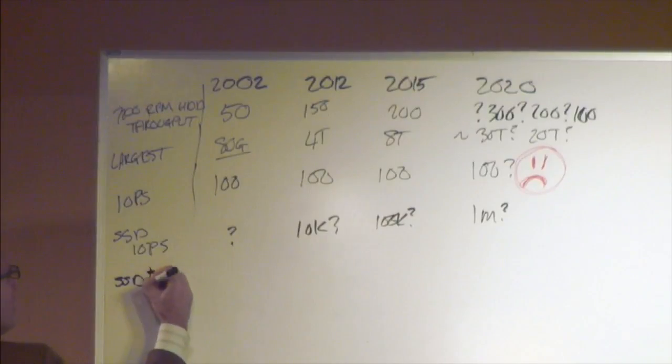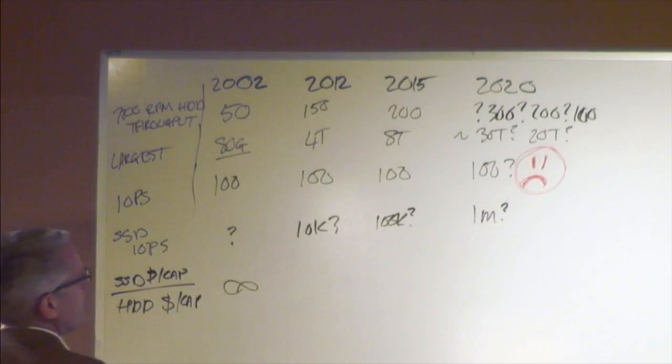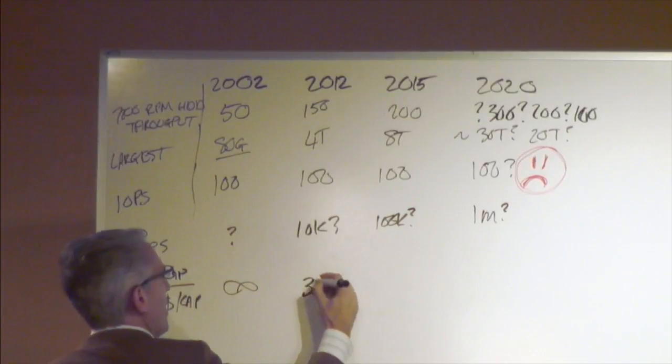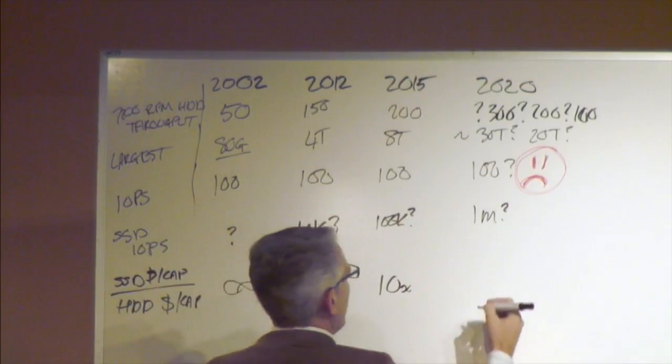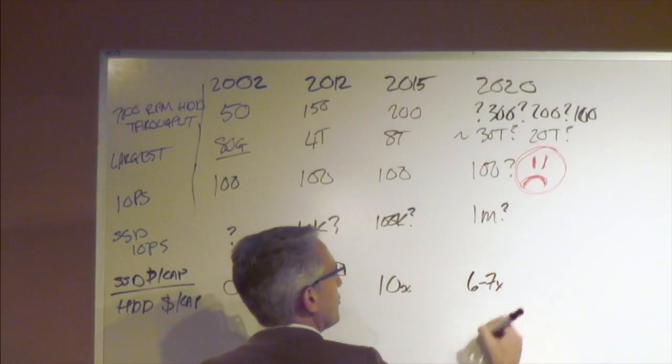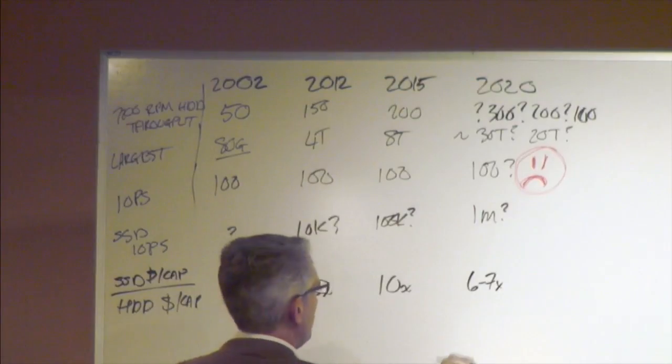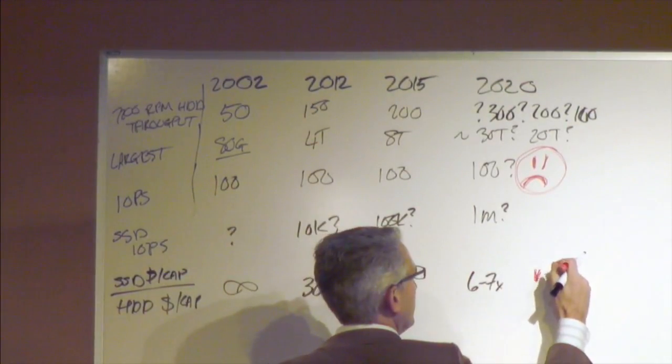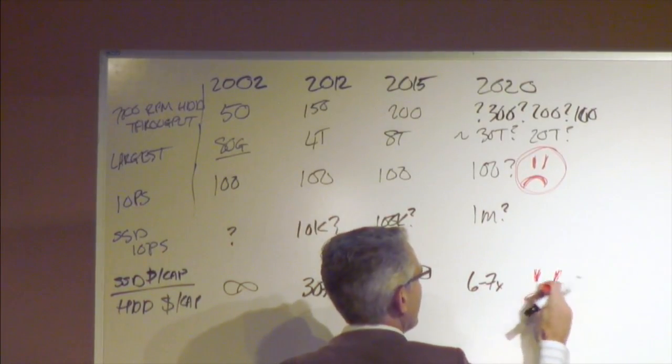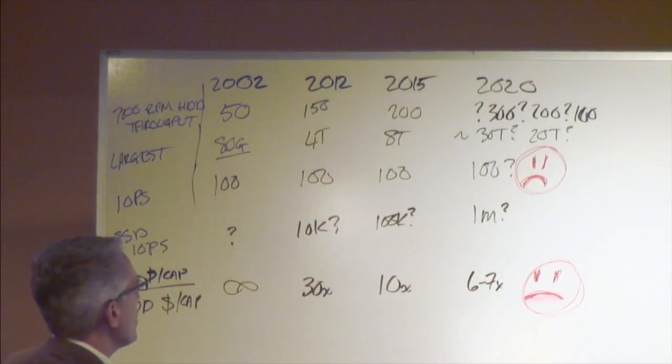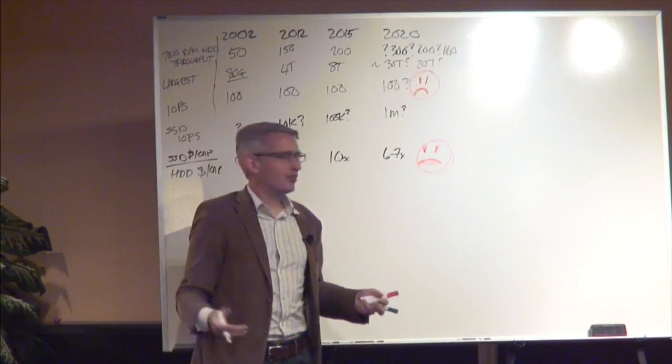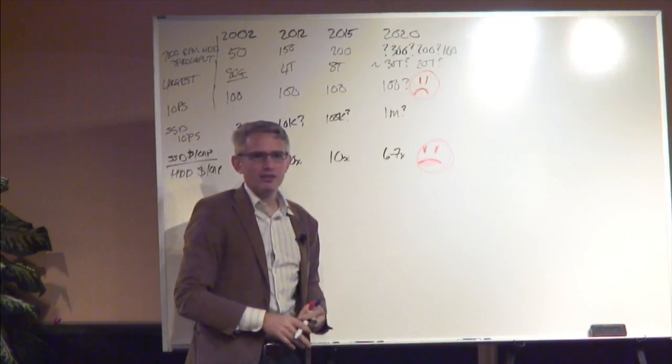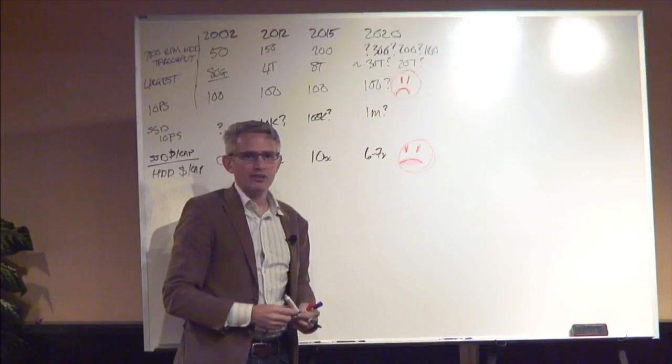But then the dollar per capacity divided by the hard disk drive dollar per capacity. This was infinite for all intents and purposes in 2002. This was about 30x in 2012, about 10x now, and Gartner seems to think this will be six to seven times in 2020. Let's imagine just five. It's very sad because it means that when you're building systems that are basically boxes stuffed with media, in the limit those boxes are still going to be six to seven times more expensive in five years if you decide to build them all with SSD.